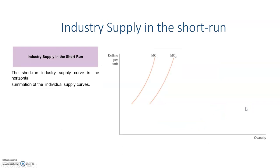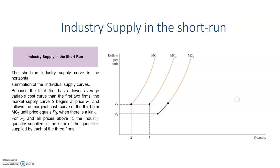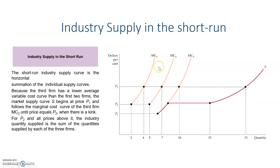What happens with the industry instead of the firm? The industry supply will depend on what quantity each of the firms is producing. For example, with three firms in this market — firm number one, number two, and number three — when the price is one, only firm number three is going to produce a quantity. So the industry supply at price one will coincide with the supply of this particular firm, because the other two are not going to supply any quantity at this lower price.